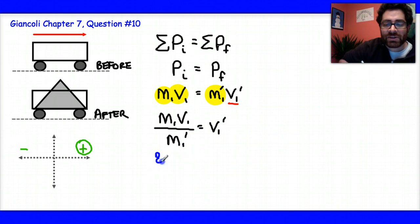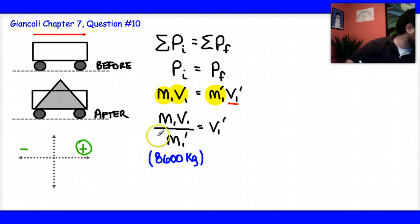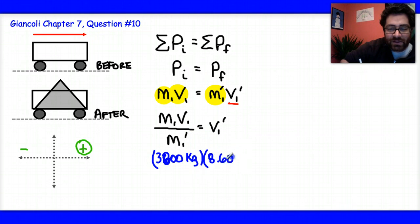The mass of the cart is 8600 kg. Oh no, it's not. It's 3,800 kg. So there's a small mistake here. Let's fix that. 3,800 kg, and it's moving at 8.60 meters per second.